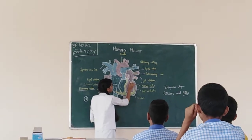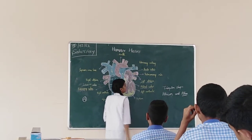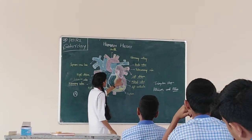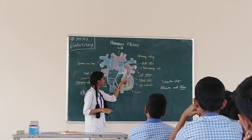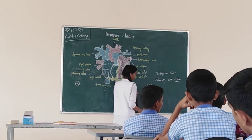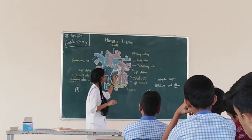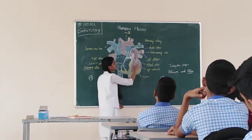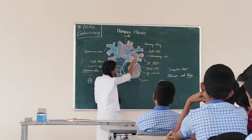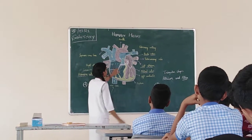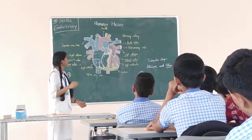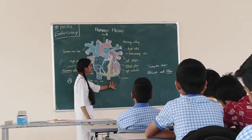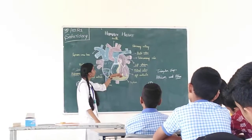The oxygenated blood comes to the left atrium. The mitral valve is present here, and when the left atrium is completely filled with oxygenated blood, the mitral valve opens and the oxygenated blood flows to the left ventricle. When the left ventricle receives the blood, the mitral valve closes again.